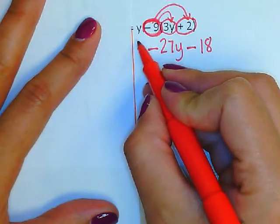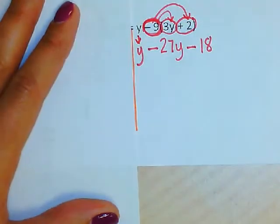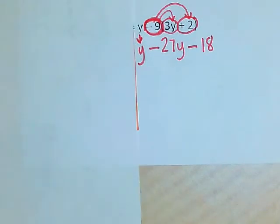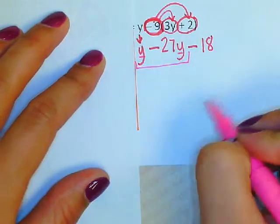The y was not multiplied, so nothing happened to it. I just bring it down. Am I done with this side, or do I need to simplify further? I do need to simplify further because these two are like terms - they both have y's.